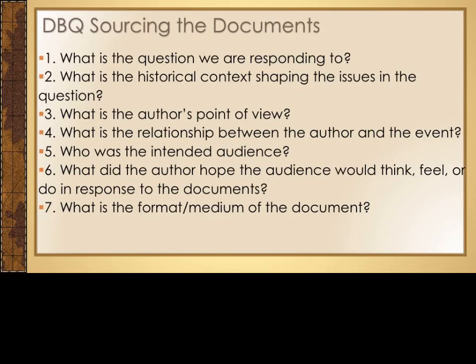Four: what is the relationship between the author and the event? How might this relationship influence the author's point of view, and does it make the source more or less credible? Five: who is the intended audience, and how did their background affect the author's approach to the issue? Someone might explain the same information differently to a group of common people than they would to elites.